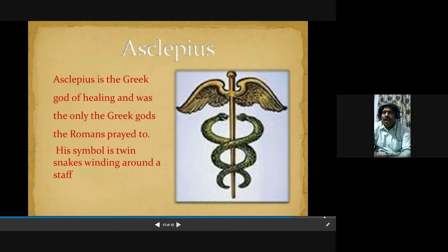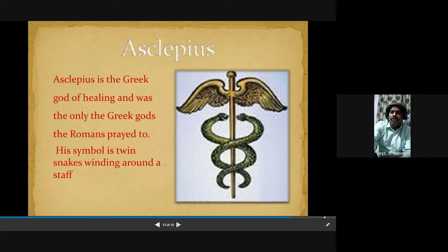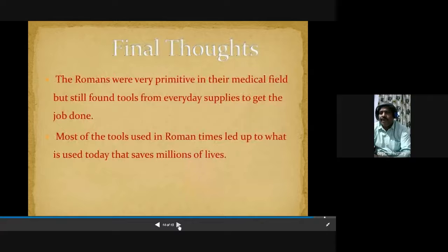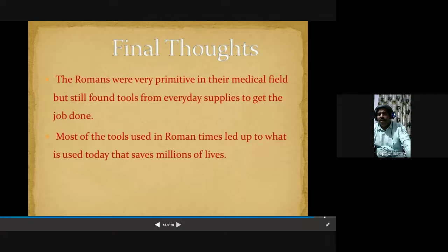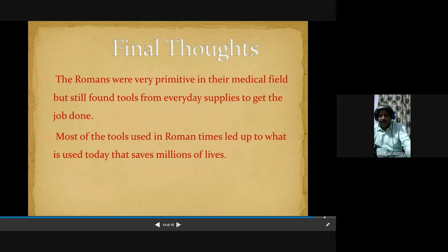Next is Asclepius, the Greek god of healing and the only Greek god the Romans prayed to. His symbol is twin snakes wound around a staff, which is a symbol for medicine. Among the important sources for Roman medicine, one is Pliny's Natural Historia, a large work covering all known science. Another one is Ptolemy, who wrote an astronomical account of that age. Apart from medicine, they had important works on astronomy also.